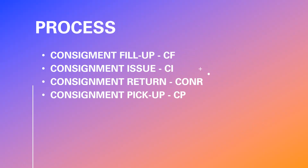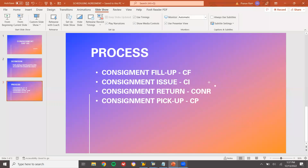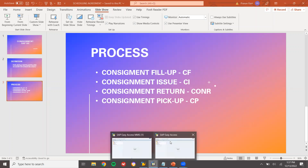There are four steps involved in the business process: Consignment Fill-Up (CF), Consignment Issue (CI), Consignment Return (CONR), and Consignment Pick-Up (CP). The first two — Fill-Up and Issue — involve outbound delivery. Consignment Return and Pick-Up involve inbound delivery. CF, CI, CONR, CP are the document types.